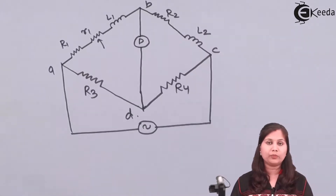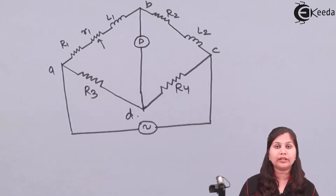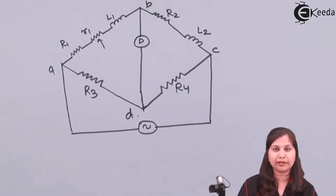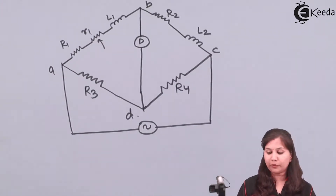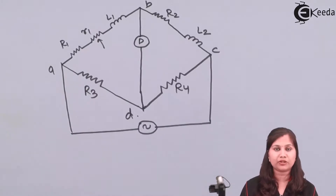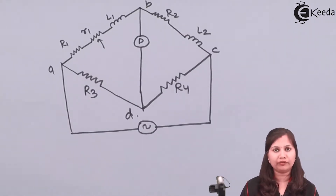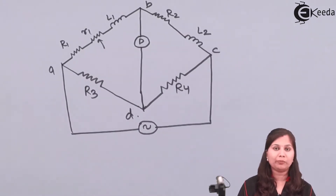In this way we can solve problems based on the measurement of unknown inductance using the Maxwell inductance capacitance bridge. There is no need to remember the balance equation — you just have to draw the circuit and then use the equation Z1·Z4 = Z2·Z3. Solving that, you can easily find out the value of the unknown variables. I hope that this problem is clear to you. Thank you.